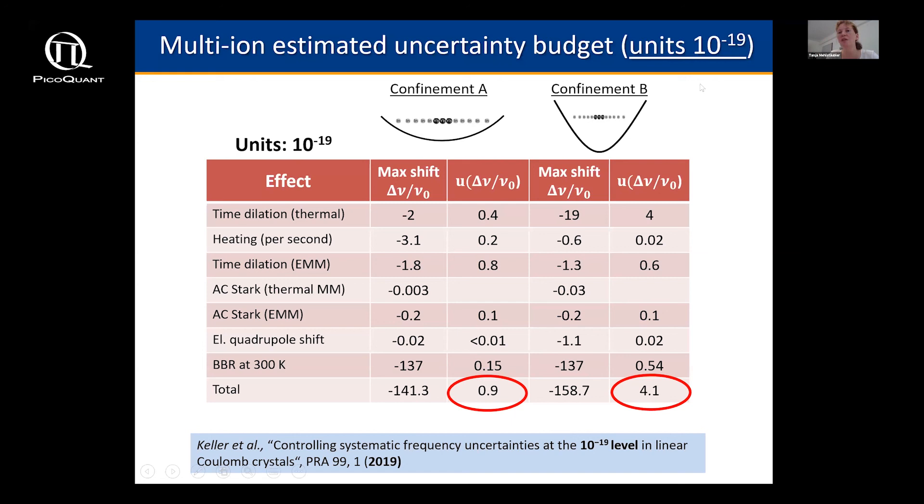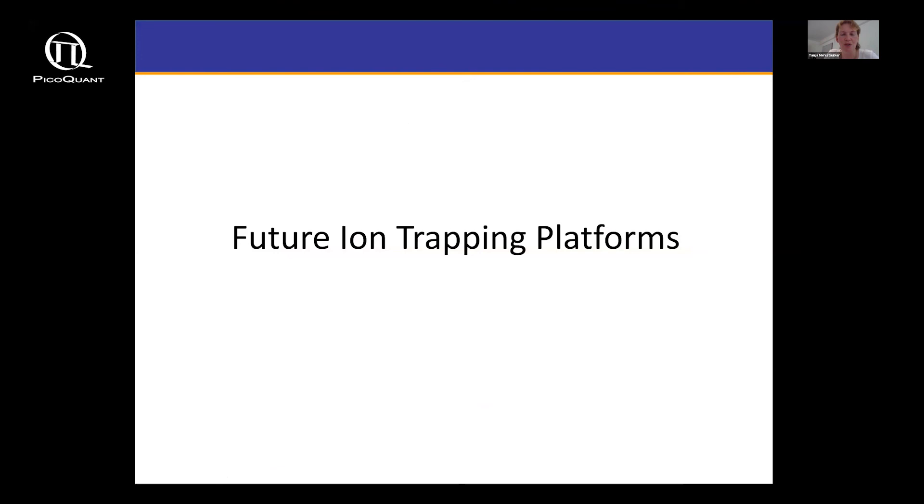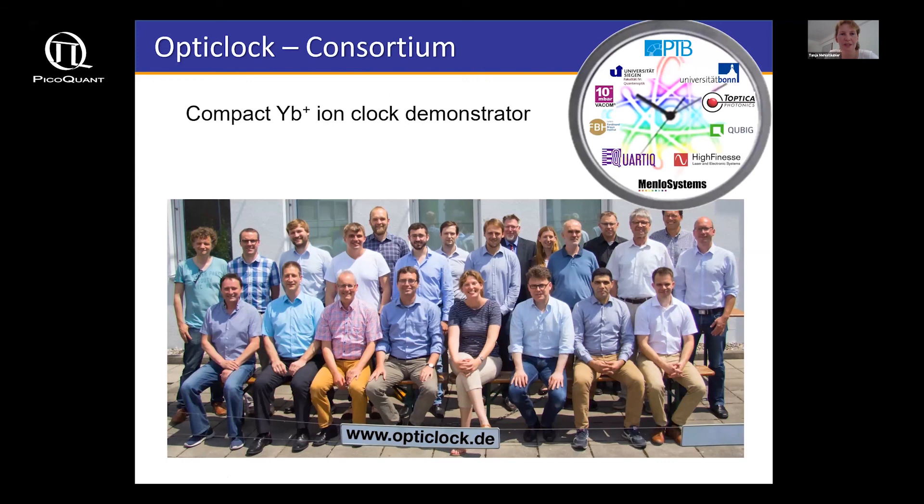Based on this ion trap that we have developed at PTB, we have already demonstrated just last year in 2019 that we can control even these complicated Coulomb crystals at the level of 10 to minus 19. Our error budget here is at the level of 10 to minus 19. This is very exciting that we can make the major leap forward and build an actual clock based on these Coulomb crystals.